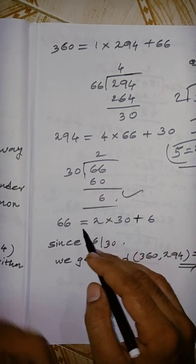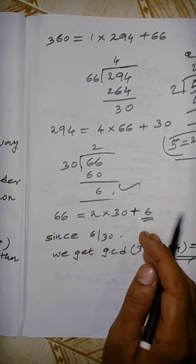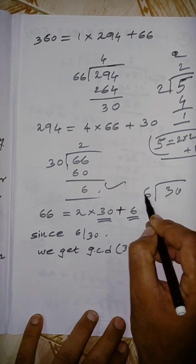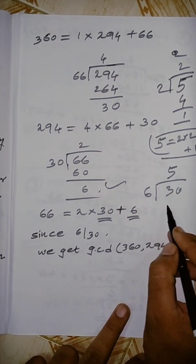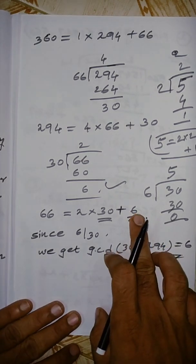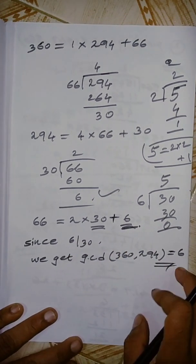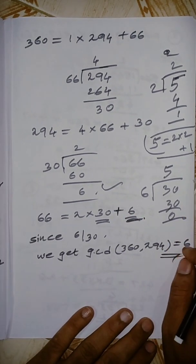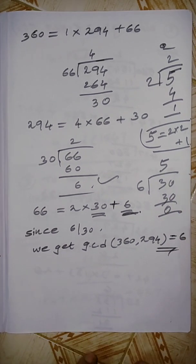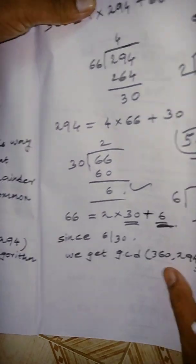So 66 = 2×30 + 6. Now divide 30 by 6: 5×6 = 30 with remainder 0. Since 6 divides 30 exactly, we stop. The final non-zero remainder is 6, so GCD(360, 294) = 6. This type of question appears in MSI exams — find GCD using the Euclidean algorithm.